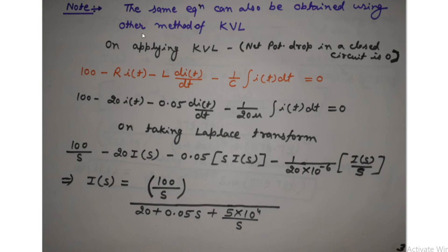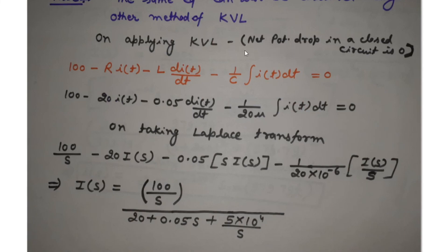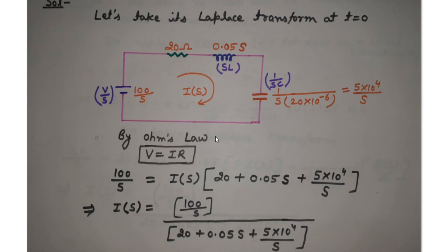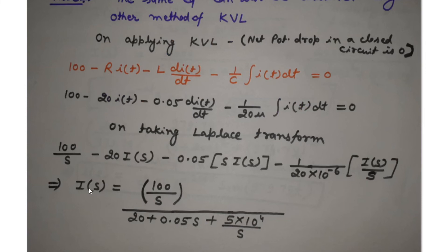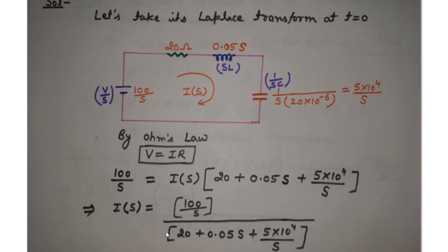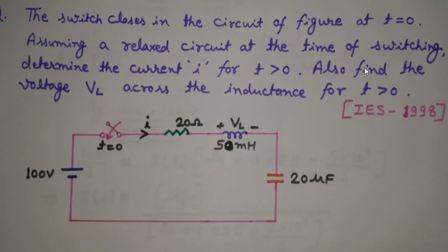The same equation can also be obtained using KVL. According to KVL — Kirchhoff's voltage law — the net potential drop in a closed loop is always zero. On applying this KVL equation in the time domain, I get this expression, which is the same as what we obtained in the S-domain method. Let's see how to apply KVL in this circuit. We assume current is flowing in the clockwise direction.